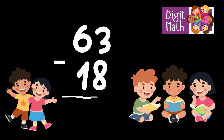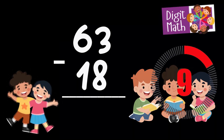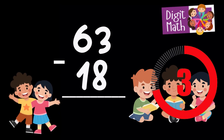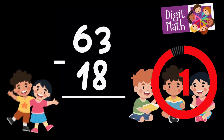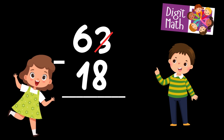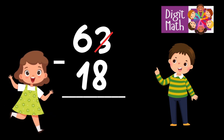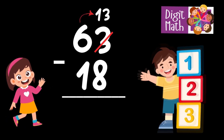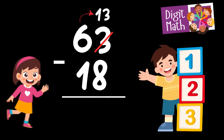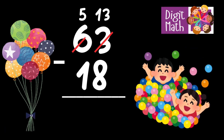63 minus 18 is... Time to think. In the Units column, we have 3 minus 8. Since it's not possible to subtract 8 from 3, we need to borrow from the Tens column. In the Tens column, we have 6. We take 1 from the Tens, leaving 5 in the Tens column and turning the Units column into 13.